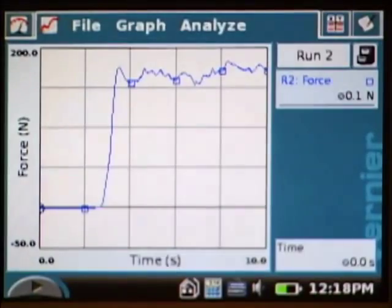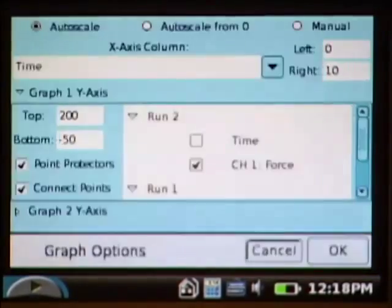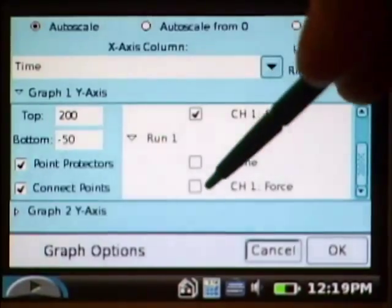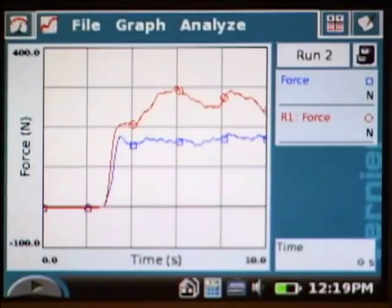To see both traces at the same time, I'm going to go to the graph menu, select graph options, and then select both run 2 and run 1. Now I can see an overlay of the first run compared to the second run. Notice that the software has color coordinated the runs for me so that my first run is in red and my second run is in blue. You can see right away that we've got a significant difference in the total grip strength between the first run and the second run.